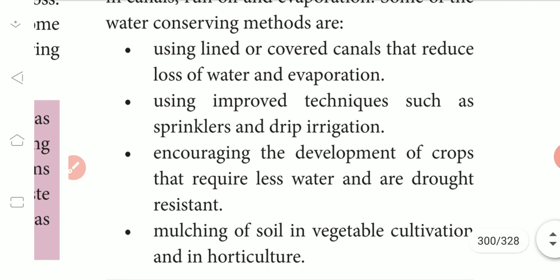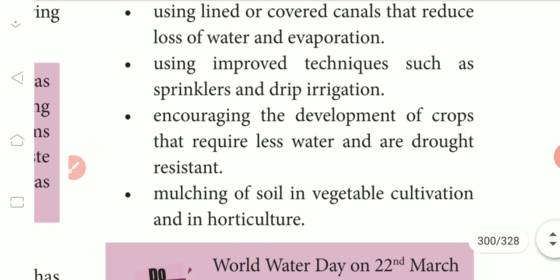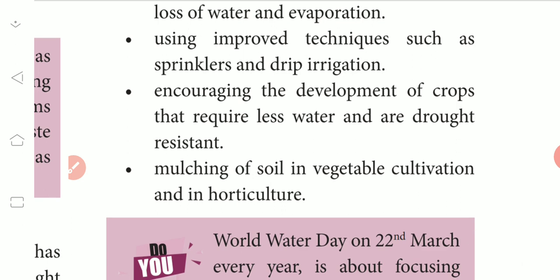Increasing the development of crops that require less water and are drought resistant. Mulching of soil and vegetable cultivation are also effective water conservation methods.